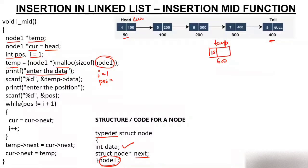We ask the user to enter the position. We've decided pos = 4, meaning we want 15 to come at the fourth position. The coding up to this point is straightforward. Now comes the important part — the while loop.